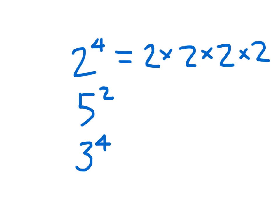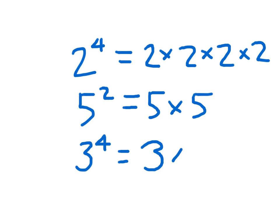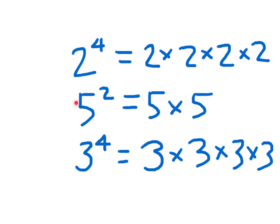How many 5s would there be? Are we going to go 5 times 2, or will we go 5 times 5? Correct — 5 times 5. For the final one, we've got 3 to the 4th power. Don't make that most common mistake. We're going to go 3 times 3. Are we done? No, because we're going to the 4th power, so we need to write another 3, and another 3. That's 3 multiplied 4 times, and 5 squared is equal to 5 times 5.